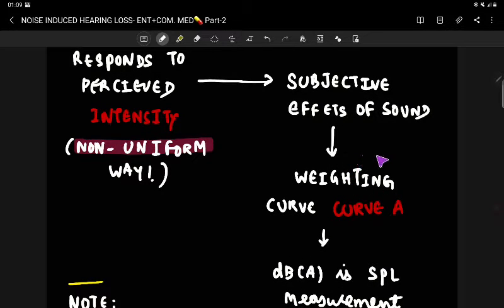Having known this, there is something called curve A which is created to measure the sound pressure level. Thereby, we are measuring sound in terms of intensity in decibels.